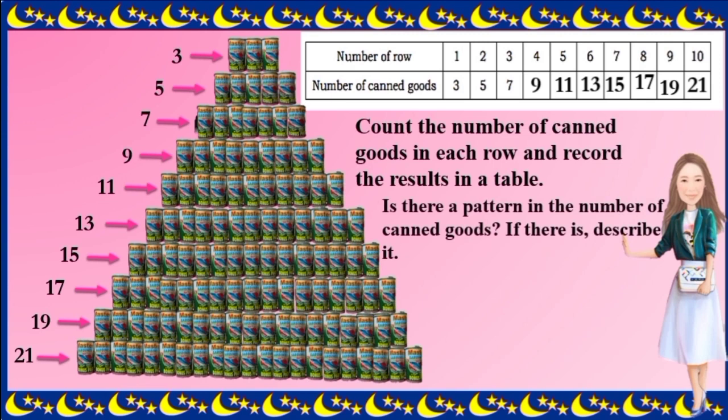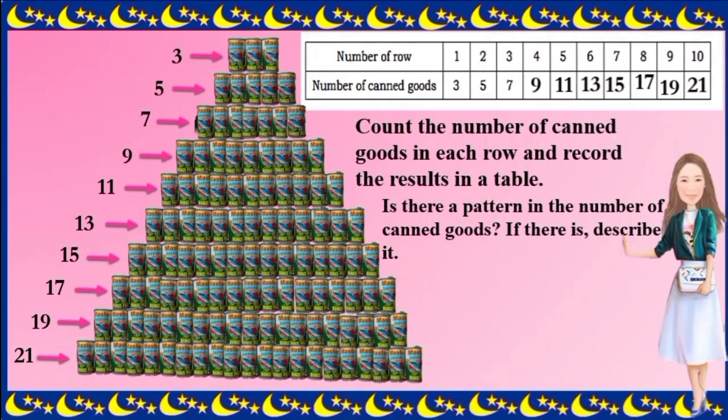Is there a pattern in the number of canned goods? If there is, describe it. Very good. Yes, the number of canned goods is increasing: 3, 5, 7, 9, 11, 13, 15, 17, 19, and 21.